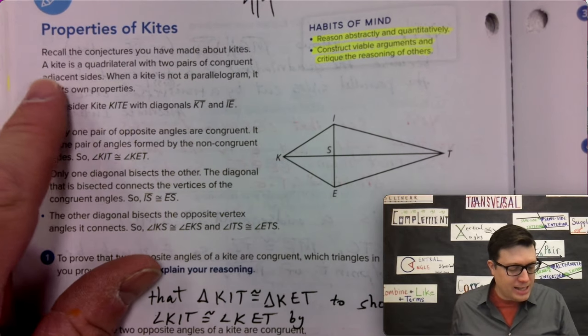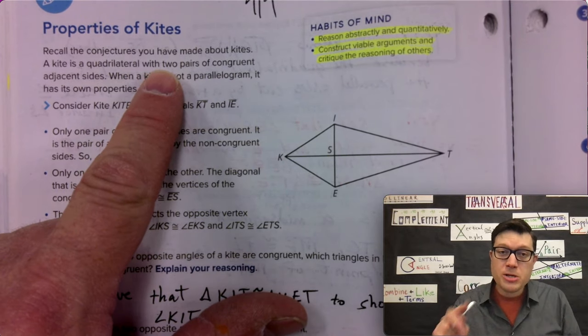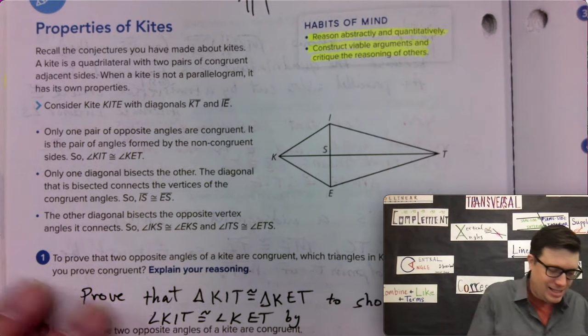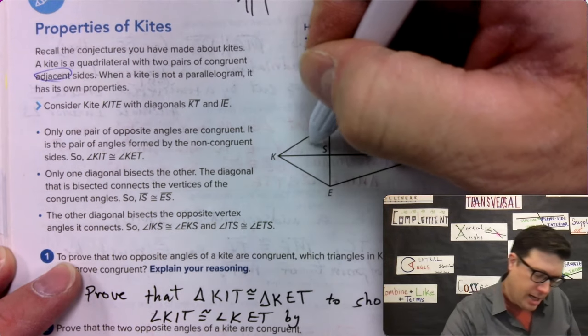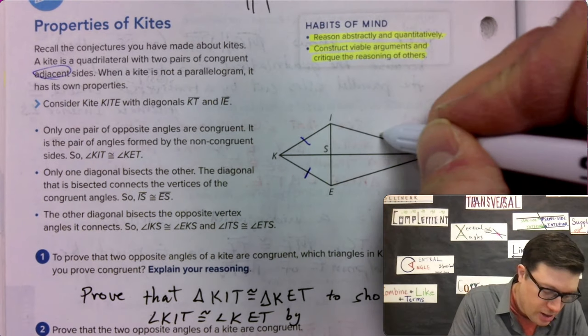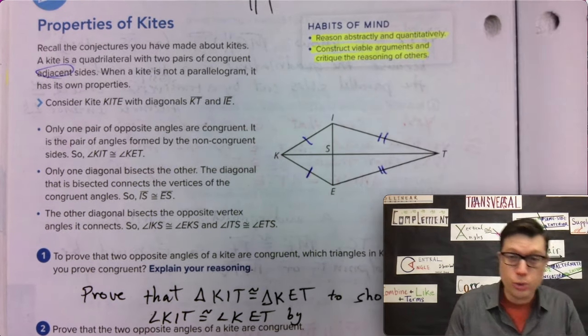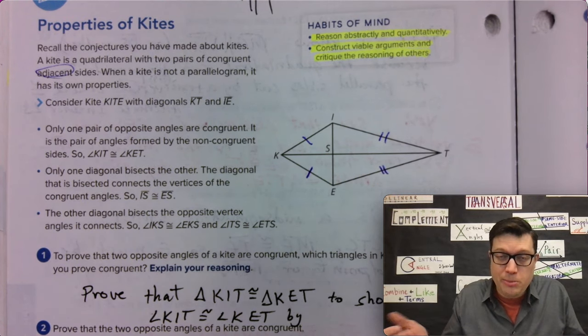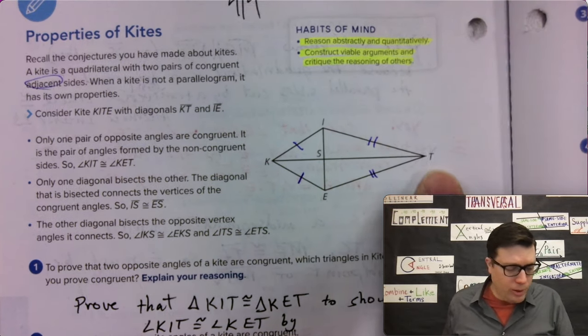In this conjecture you've made about kites, a kite is a quadrilateral with two pairs of congruent adjacent sides. So that side and that side. That is just something that's given because we have a kite shape. And these two sides, so two spikes, because they're the same length, and they also meet at point T.